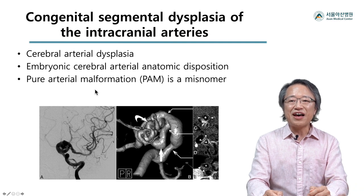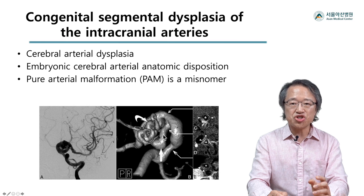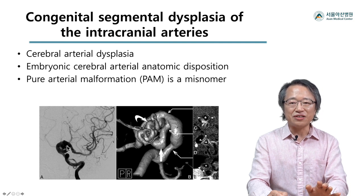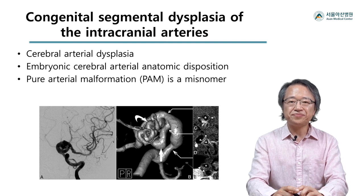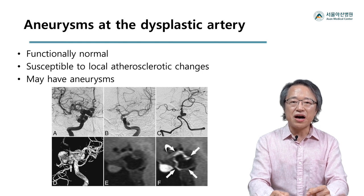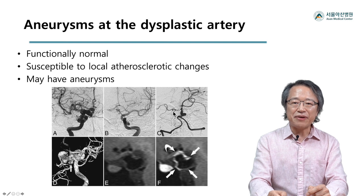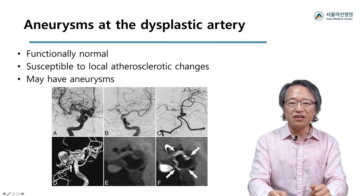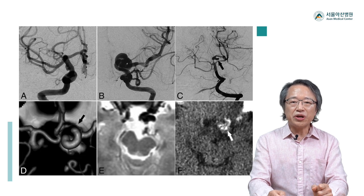The aneurysm in the dysplastic arterial segment: not infrequently, a certain segment of the cerebral artery can show an unusual shape. When you look closely, the primary problem is excessive elongation of the involved segment — that is, arterial dolicosis. Sometimes dolicosis can be combined with focal stenosis or dilatation. The stenotic segments are vulnerable to atherosclerotic changes including wall calcification, and the dilated segments can eventually develop into aneurysms. We reported our experience with these lesions a few years ago and observed diverse wall changes associated with dysplasia.